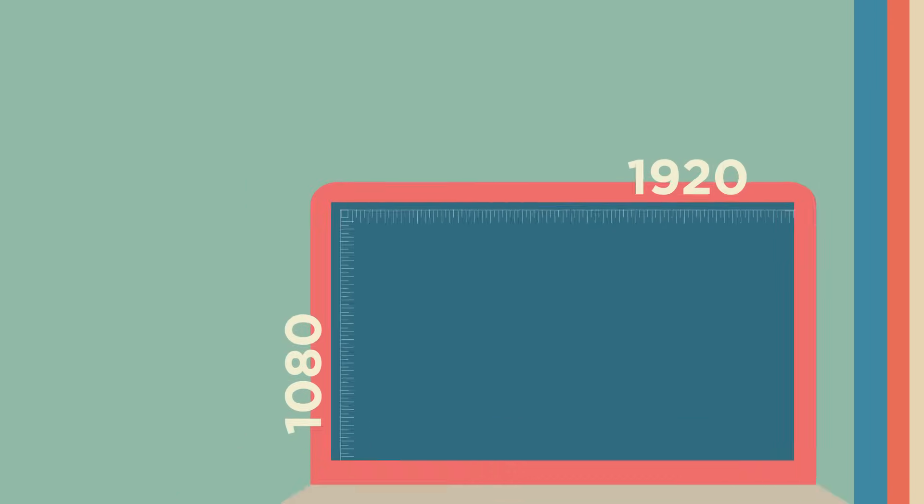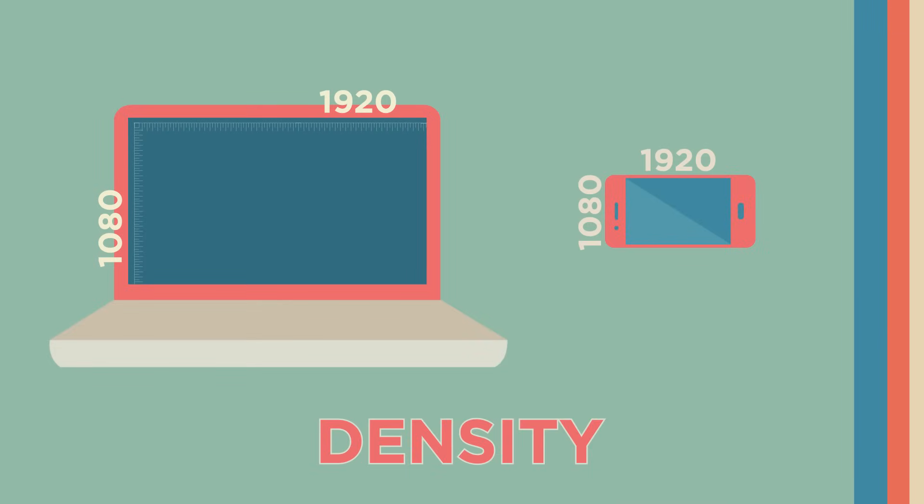There's the question not only of resolution but also of density. For instance on modern smartphones they fit the same number of little lights called pixels but in a denser space, and that's what allows you to get sharper images.